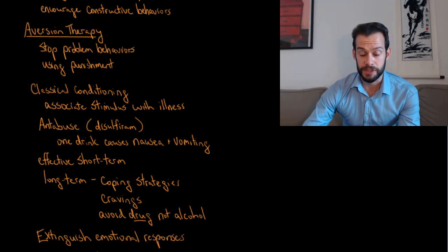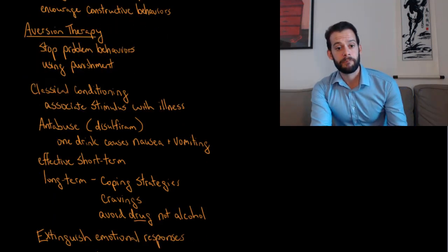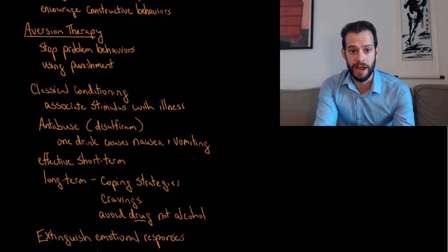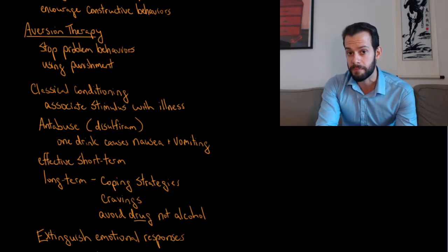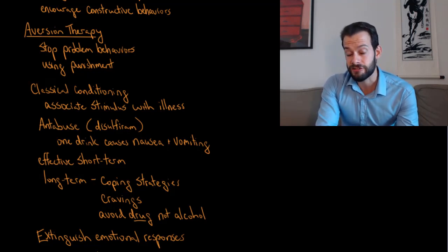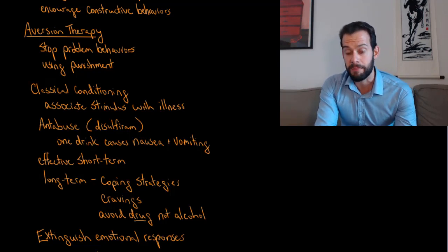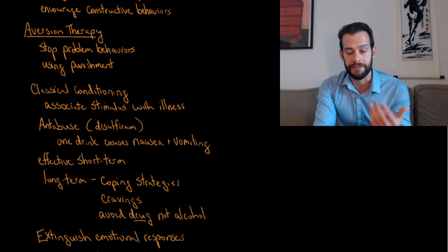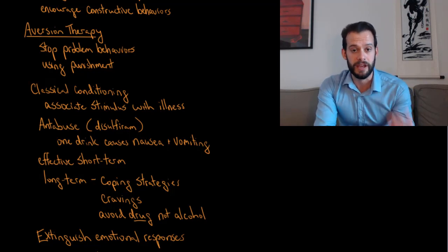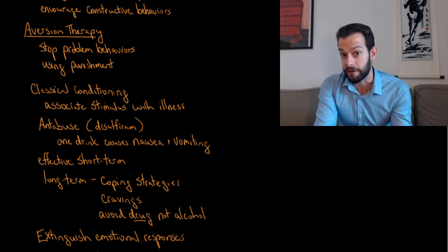One way to extinguish unwanted behaviors is through aversion therapy, where we try to stop problem behaviors by creating something aversive — using punishment. A simple example is putting something that tastes really bad on your fingernails to stop nail biting. Each time you go to bite your nails, you get this bad taste in your mouth, and from what we've learned about conditioning, you'll now associate biting your fingernails with this aversive taste, which should help you stop.